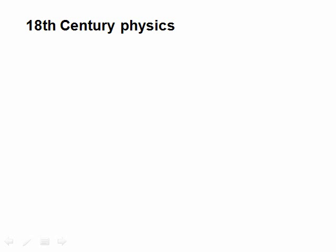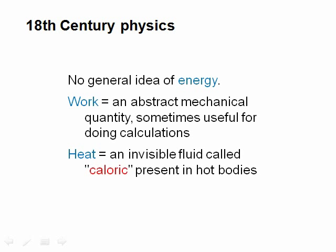A couple of hundred years ago, they didn't even know that heat and work were the same sort of thing — there was no general idea of energy. Work was an abstract mechanical quantity, sometimes useful for calculations. And heat was regarded as an invisible fluid called caloric, present in greater abundance in hot bodies than in cold bodies. When you put something hot and something cold together, caloric would flow from the hot body to the cold body. But work and heat were not at all the same kind of thing.